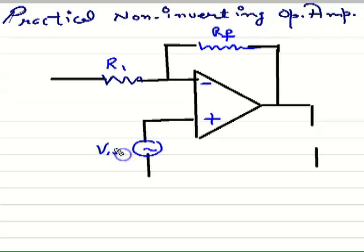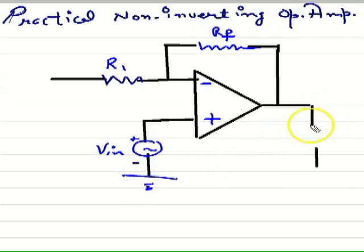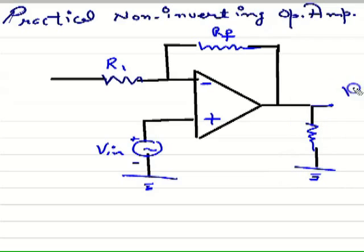The real operational amplifier is not like the ideal. Input impedance will be very high, no doubt, output impedance will be low, and the gain will be not infinity but quite high. So in this sense, ideal and real are different.